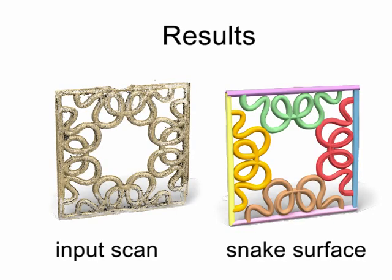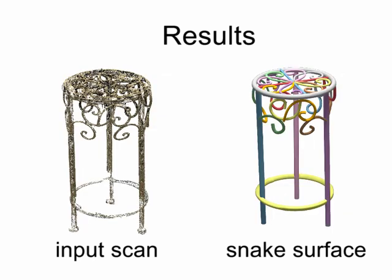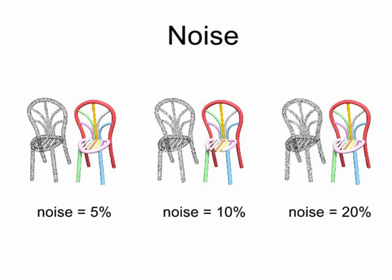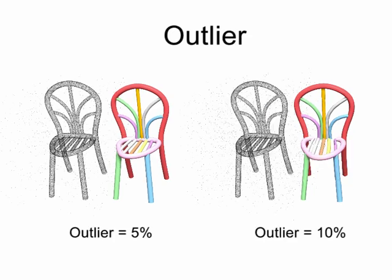Some more results of our algorithm. We evaluate the accuracy and robustness of our algorithm on scanned data of varying quality. Here are the results on data with adding different amount of synthetic Gaussian noise. Here are the results on data with different amount of missing parts. And the results on data with different amount of outliers.